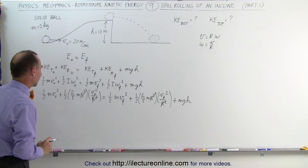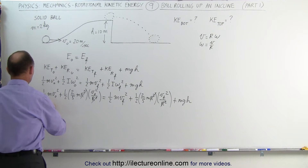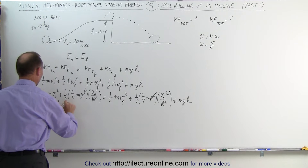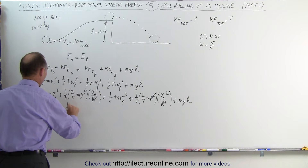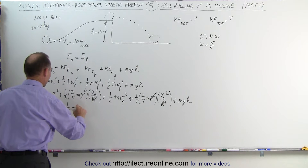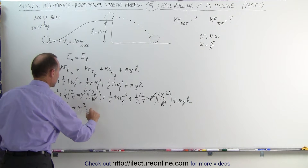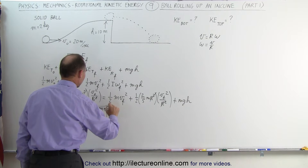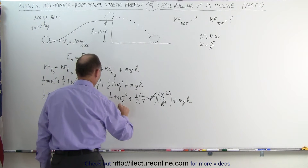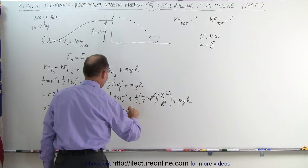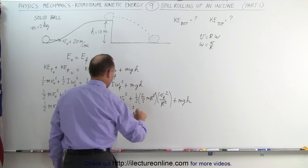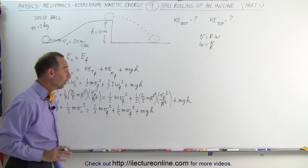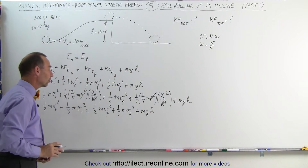Simplifying things a little bit more, we can now write this as one-half MV initial squared plus one-fifth MV initial squared, equals one-half MV final squared plus one-fifth MV final squared, plus MGH.